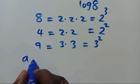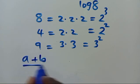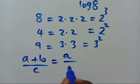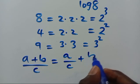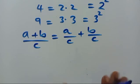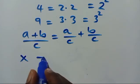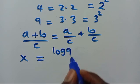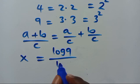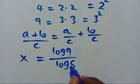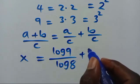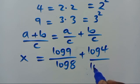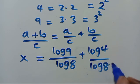Before substituting, we recall that (a + b) over c can be simplified as a/c plus b/c. So from here we have X equals log 9 over log 8 plus log 4 over log 8.